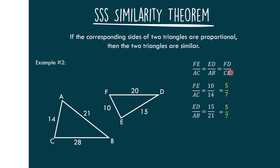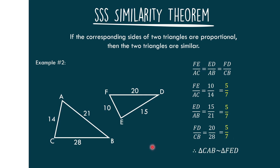The last ratio: FD over CD equals 20 over 28. Dividing both numerator and denominator by 4, we get 5 over 7. Since all three ratios are equal, we can conclude that triangle CAD is similar to triangle FED by SSS similarity.